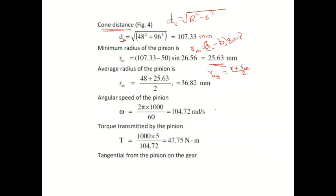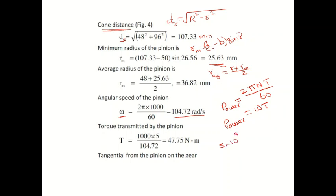Now we find the torque. Power = 2πNT / 60. The angular velocity omega = 2π × 1000 / 60 = 104.72 rad/s. Power is 5 kilowatt = 5 × 10³ W. Substituting: 5000 = 104.72 × T. Solving gives the torque value.